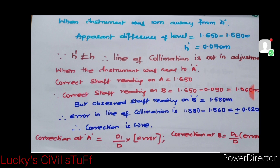When the instrument was near to A, the correct staff reading on A is 1.650, and the correct staff reading on B is 1.650 minus 0.090, you got 1.560. But the observed staff reading is 1.580.